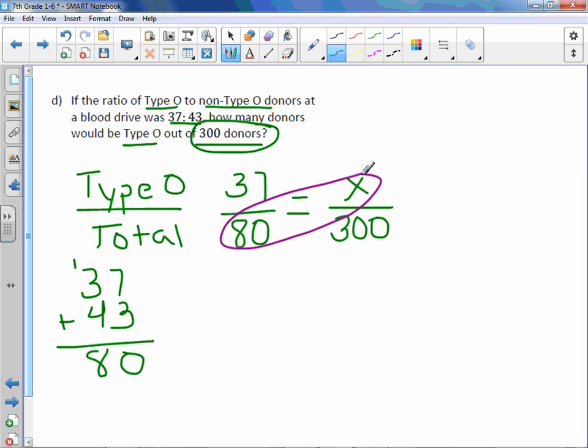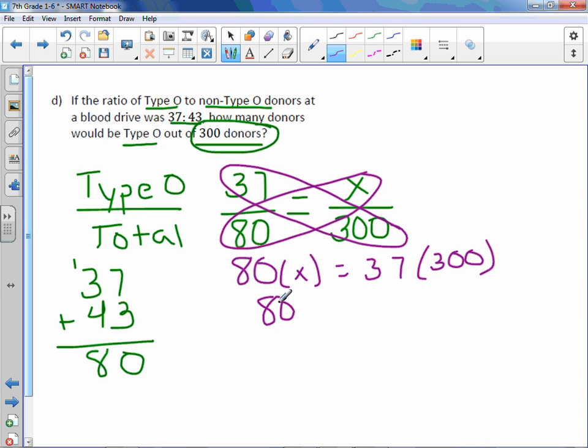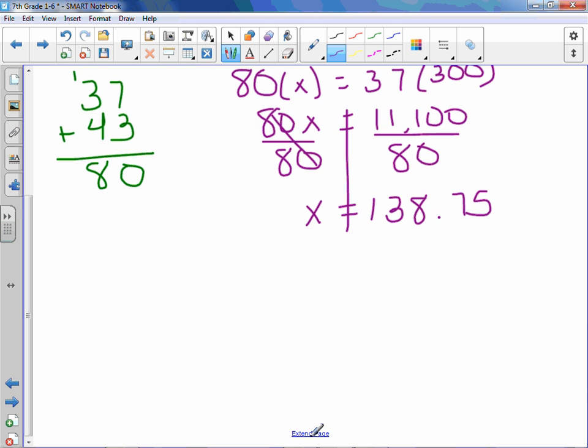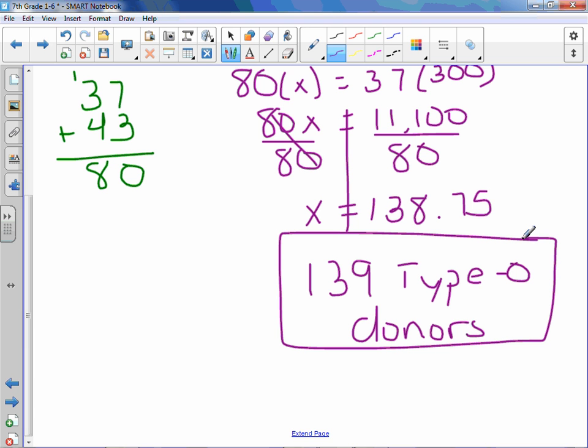From here, we can cross multiply. 80 times X equals 37 times 300. Well, 37 times 300 is 11,100. Get X by itself. Divide both sides by 80. And we actually get X is 138.75. However, we're talking about people. We can't have a fraction of a person. So we'll round to the nearest person. So 139 type O donors. So out of those 300 people, approximately 139 of them have type O blood.